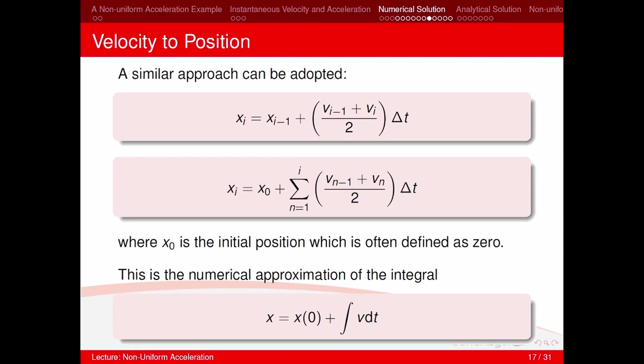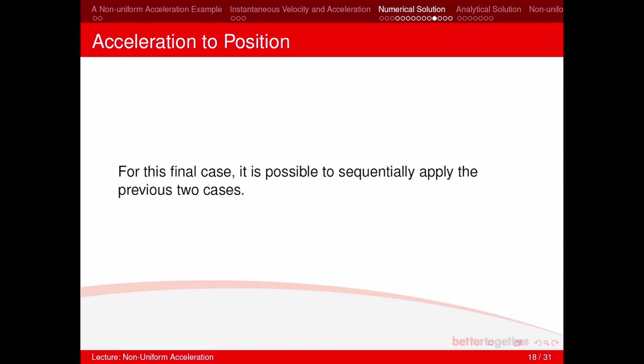A similar approach converts velocity to position: x_i = x_{i−1} + average velocity × Δt. The numerical approximation mirrors x = x_0 + ∫v dt. To go from acceleration to position, we simply apply these two methods sequentially.